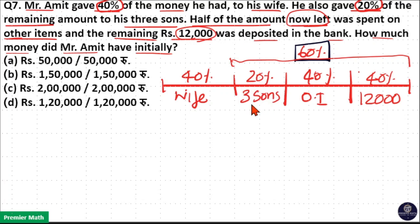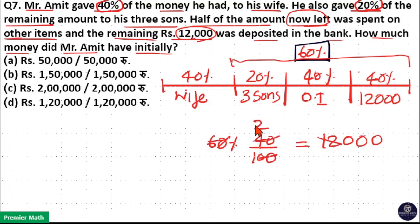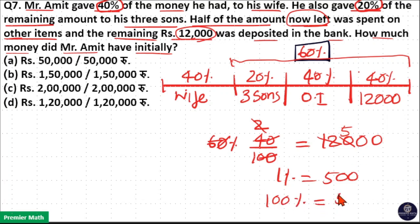60% of 20% he gave to his sons, and 40% he gave to his wife. The remaining 60% of 40% equals ₹12,000. Writing this as 40 divided by 100: cancelling zeros, 6 × 4 = 24, and 12 goes 2 times into 24, giving 2. Then 2 goes 5 times into 10. So 1% equals ₹500, meaning 100% — the initial amount — is 500 × 100 = ₹50,000. So option A is your answer.